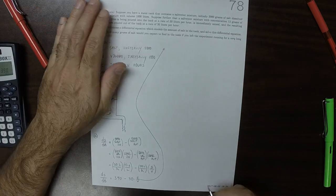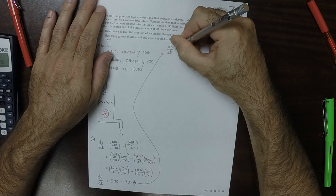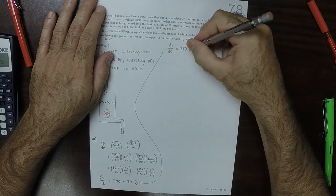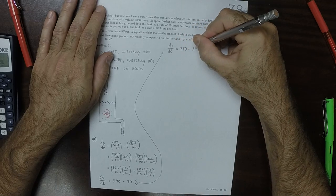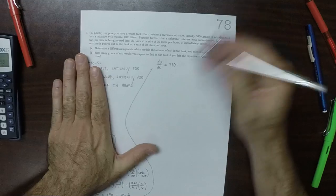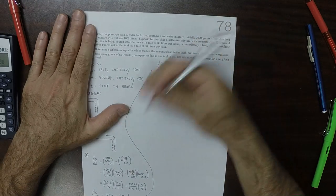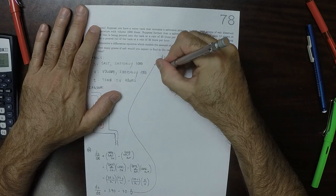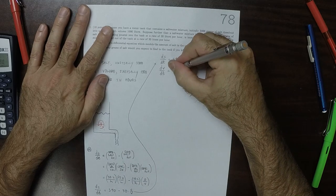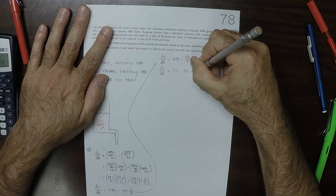So we'll also need a differential equation for V. So we have dS/dT is 390 minus 30 over V times S. So that's one of them. And we'll also need dV/dT. Well, we already established that the rate in is 30 and the rate out is 30. So that's equal to 0.